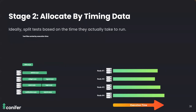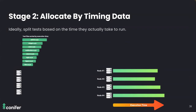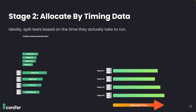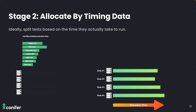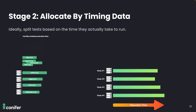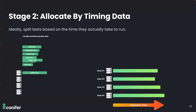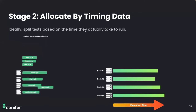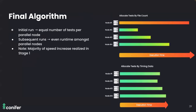On subsequent test runs, Conifer uses this timing data to allocate test files such that the difference in total test time between each parallel node is minimized. Beginning with the longest-running test, the algorithm goes through each test file one by one and adds it to the node with the smallest estimated total run time, rather than the fewest test files. This results in nodes that take a similar amount of time to finish execution. To recap: the naive algorithm is responsible for the majority of the speed increase, meaning users enjoy substantially reduced test suite runtime from the very first run.